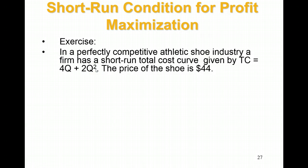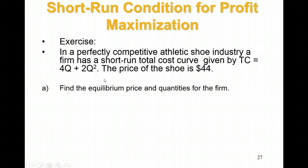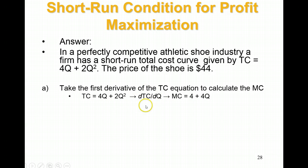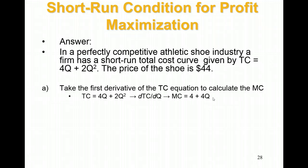To go from the total cost equation to marginal cost, you take the first derivative. Starting from TC equals 4Q plus 2Q squared, you take the first derivative: you drop the Q from 4Q to get 4, and you bring the exponent down for 2Q squared — multiply 2 by 2 to get 4Q. So marginal cost equals 4 plus 4Q. This means every time you increase Q by 1, you can show the change in total cost by this equation.